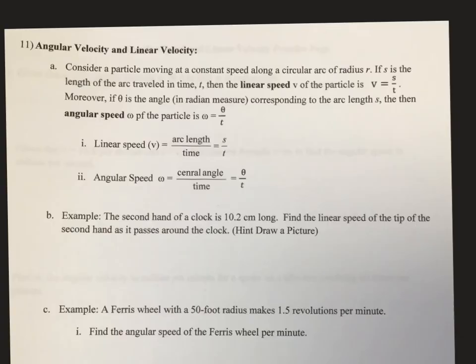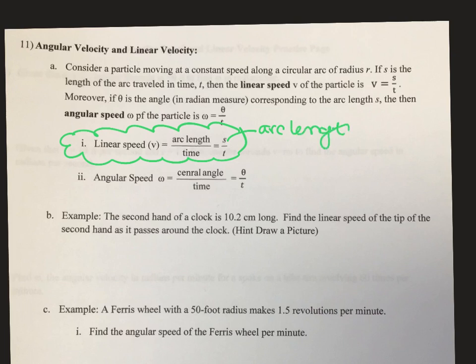So our first formula is linear speed. And our linear speed is some arc length over time. And remember, we use s to represent arc length. Our angular speed down here is a central angle over time, or the theta is the amount you spun.